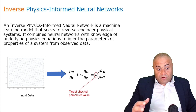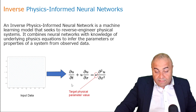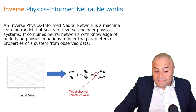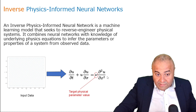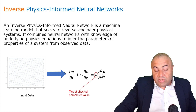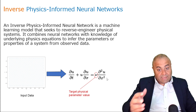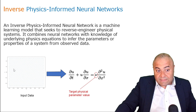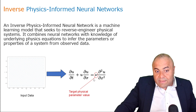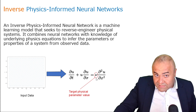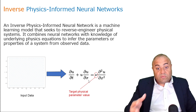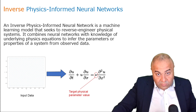For example, if we have Burgers' equation, there is a parameter u that changes with t. It is u multiplied by the first derivative of u with respect to x, and it equals a parameter referred to as the viscosity parameter, multiplied by the second derivative of u with respect to x. If we have the solution of Burgers' equation as input data and want to predict the viscosity parameter v, we only have the data and the equation itself, but not the viscosity value.